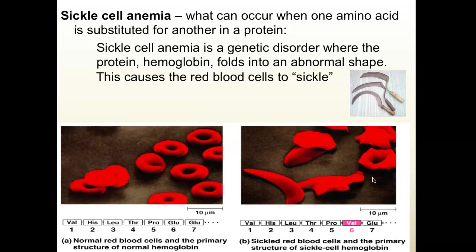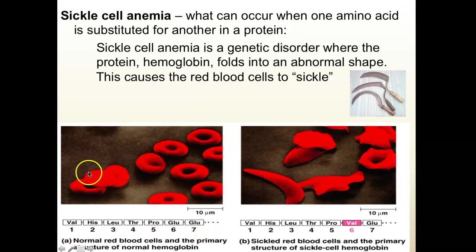Here's an example: sickle cell anemia. This is an example of how important protein folding is and how important the primary structure is. This is a genetic disorder where you inherit a mutated form of the protein. This is the sequence of amino acids — the primary structure of a normal red blood cell. In someone with sickle cell, the sixth position is different. In a normal cell it's GLU; in an affected sickle cell it is VAL. That one tiny amino acid switch caused the entire protein to fold differently. Because it folds differently, it folds into a sickle shape, and since the cell is floppy it follows the outline of the protein.